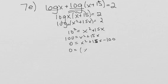So then I'm going to factor that out and I get x plus 20 and x minus 5. Using the zero product property, that tells me that x has to be negative 20 or positive 5.